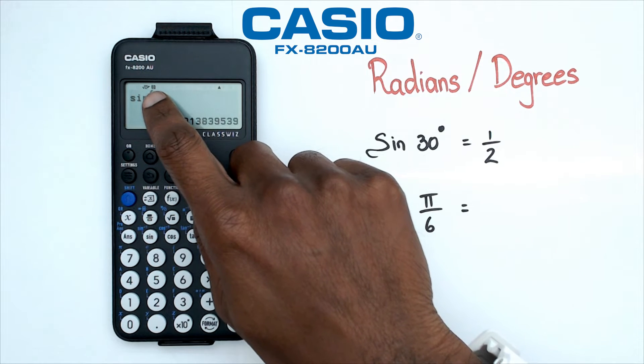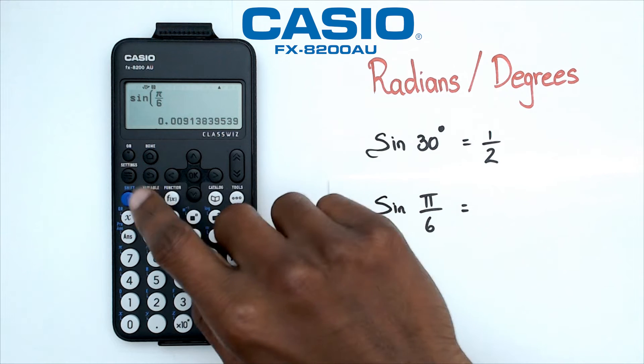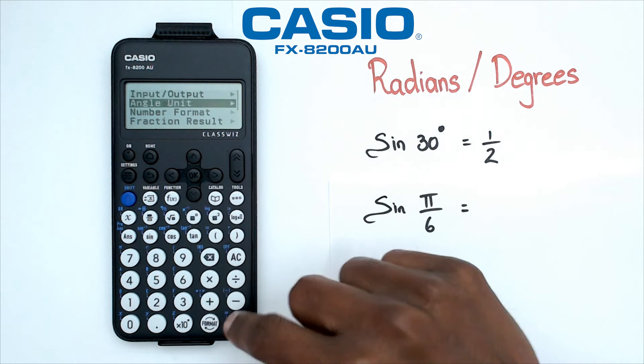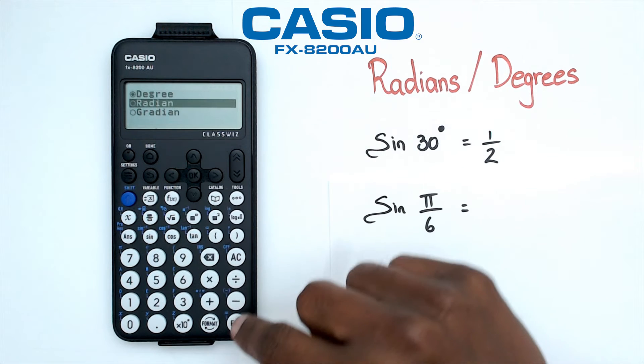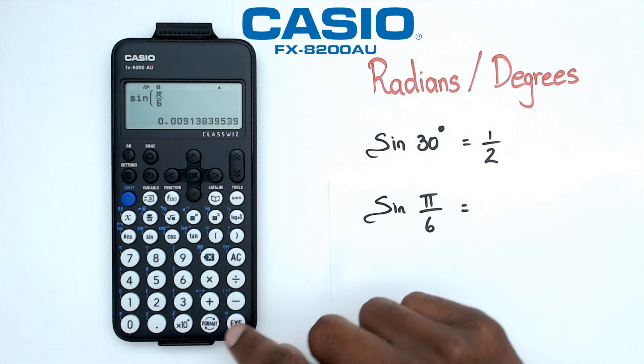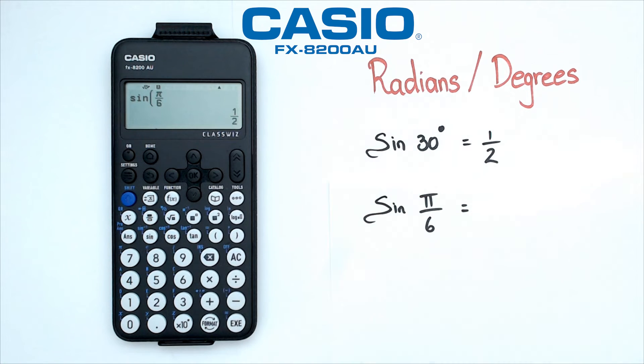Now the reason is because the calculator is in degrees mode, so we need to change it to radians. So what we're going to do is click on settings, calc settings, go into angle unit and we're going to change into radians. Once we do that, now if we go sine pi over 6 and we press equals, we are actually getting one half.